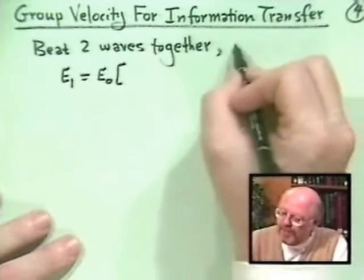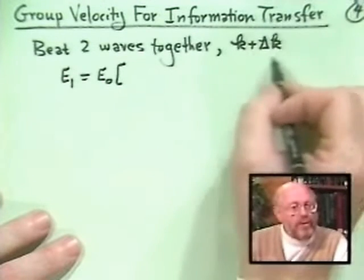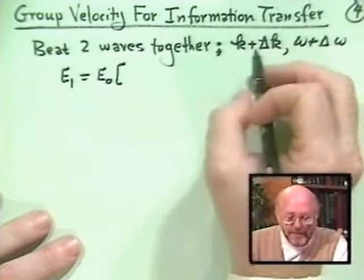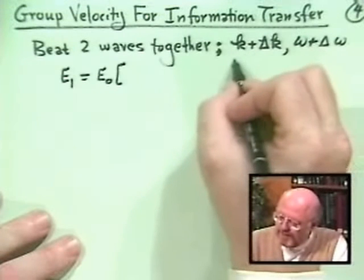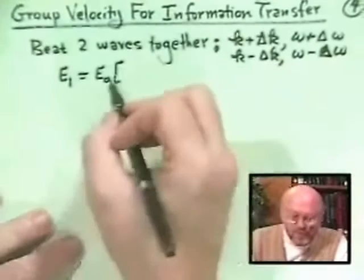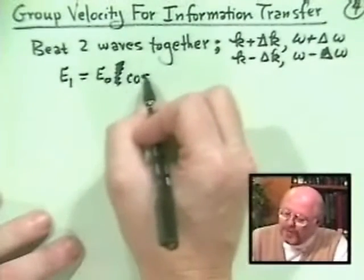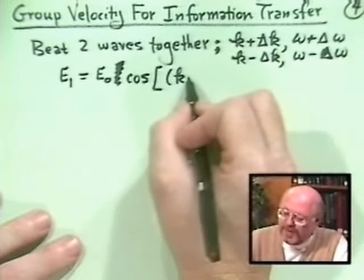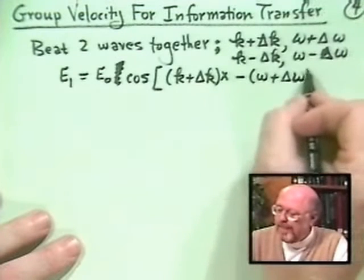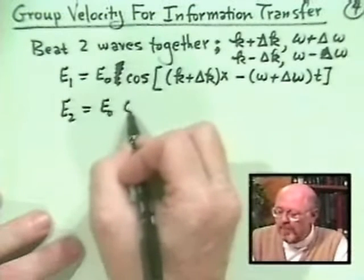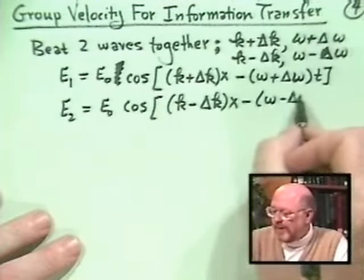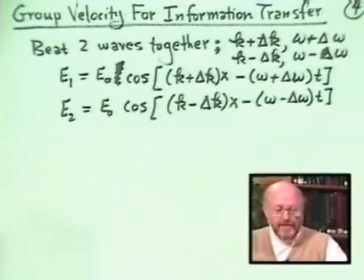We imagine two waves: the first has wave number k + Δk and frequency ω + Δω, and the second has k - Δk and ω - Δω. So E₁ = E₀·cos((k + Δk)x - (ω + Δω)t) and E₂ = E₀·cos((k - Δk)x - (ω - Δω)t). Now we add these two waves together.